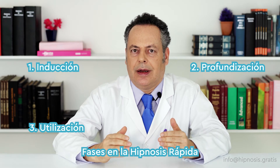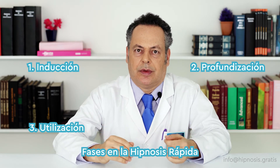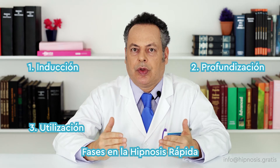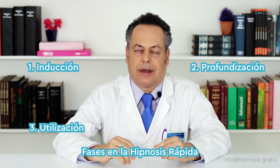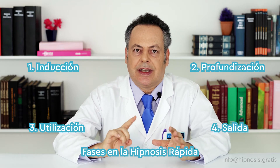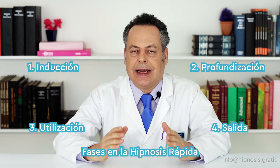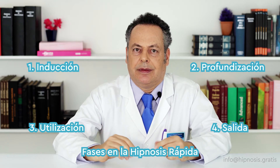During the development of a hypnotic session, the operator usually performs four well-differentiated processes according to the purpose of each one of them. These processes are: induction, deepening, use, and exit or dehypnotization. The induction process establishes the trance. The deepening process makes it more intense, taking the subject through different degrees of depth as required by the objective pursued.